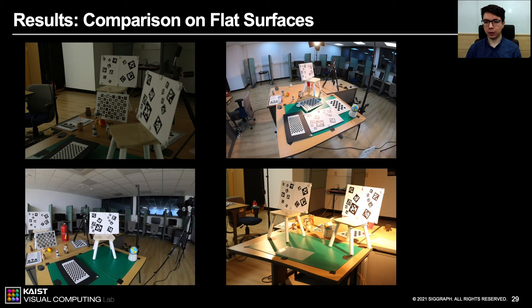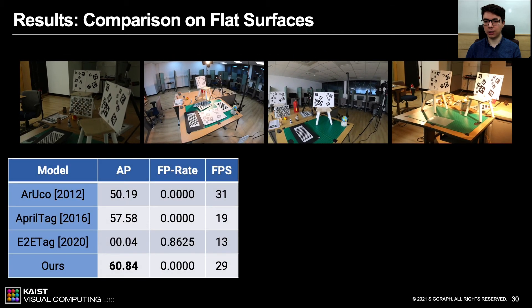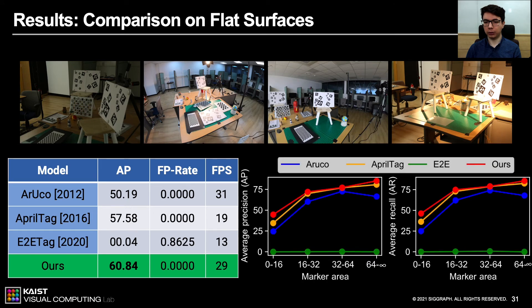Here, we experiment our prediction capabilities on real-world flat image dataset compared with the state-of-the-art visual marker system. Again, we use average precision score and compare the false positive rates along with the processing time metric, frames per second. Our results validate that we achieve the best results with real-time performance. Also on the right, we plot the average precision and recall values with respect to changing marker size in the image. Our system shows better performance for all sizes of markers, especially the small marker sizes.